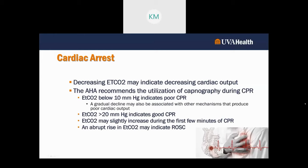For cardiac arrest, decreasing end-tidal CO2 may indicate decreasing cardiac output from hemorrhage, pneumothorax, tamponade, or MI. The AHA recommends capnography during CPR — it gives great feedback. An end-tidal CO2 below 10 indicates poor CPR; tell that person to push harder and faster, or switch them out. A gradual decline may also be associated with other mechanisms producing poor cardiac output. End-tidal CO2 between 10 to 15 means continue to optimize CPR.